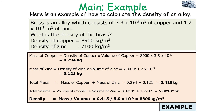You then work out the total volume of the alloy by adding the volumes of the individual metals together. When you've worked out the total mass and the total volume, you calculate the density of the alloy by doing mass over volume. Remember: to work out the mass of individual metals, multiply the volume of each metal by the density of each metal.